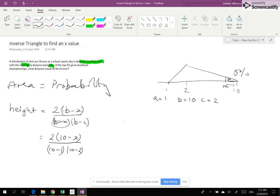So therefore the area of my triangle is a half base times height. Well, the half is going to stay. The base is 10 minus X. And just because I'm being careful, I'm going to put that in brackets. And then I've got my height, which is 2 lots of 10 minus X over 10 minus 1 times 10 minus 2.